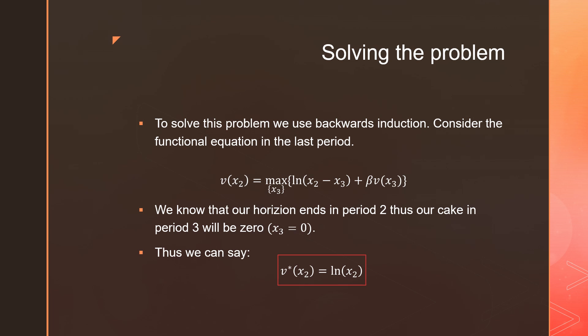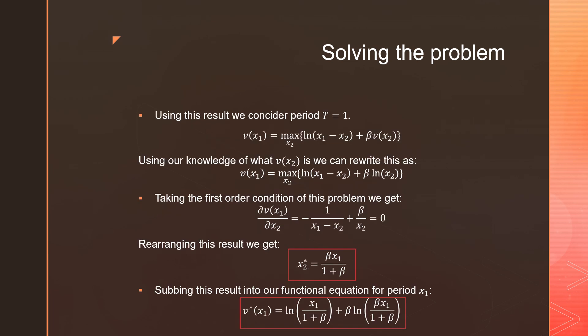Using this result that we've derived, we consider period T equals 1. We have our Bellman equation here and we can rewrite this using the knowledge that V(X_2) equals ln(X_2).